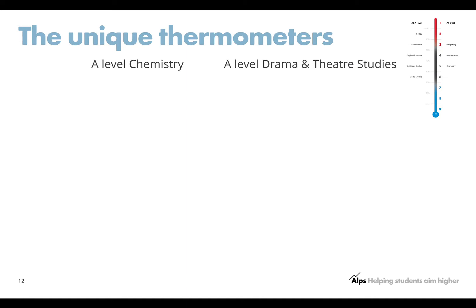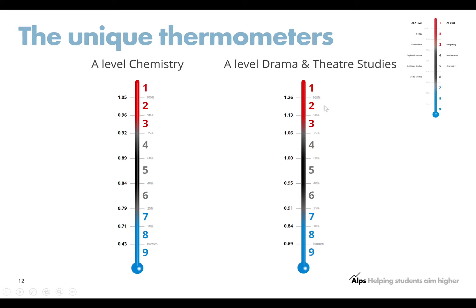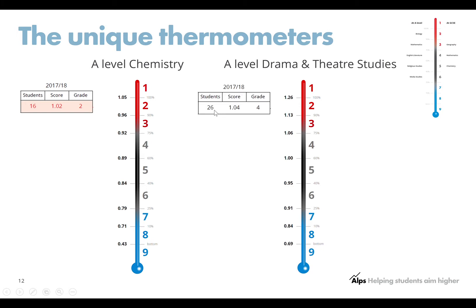I've chosen two different departments. Let's look at chemistry first. That is a unique thermometer for A-level chemistry — it runs from 1.05 down to 0.43. And there's the drama A-level thermometer, running from 1.26 down — so that's a very different unique thermometer. I've chosen those specifically to show you the difference between the two. Let's say I have a chemistry department who scores 1.02 — every student in that department, those 16 students, have pretty much matched their MEG. Then the drama department: 26 students, scored 1.04, which means every student has hit their MEG, though there might be a couple who are over their MEG. So let's plot that onto those two thermometers.